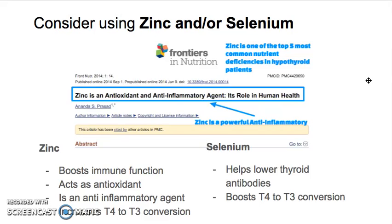In terms of dosing, you don't really want to take more than 50 to 60 milligrams of zinc per day, or more than 200 to 400 micrograms of selenium per day. I typically recommend looking at your blood levels first and then considering supplementation. However, many patients do need supraphysiologic doses of these nutrients, so regardless of what the lab shows, sometimes it's beneficial to take some of these beyond that.